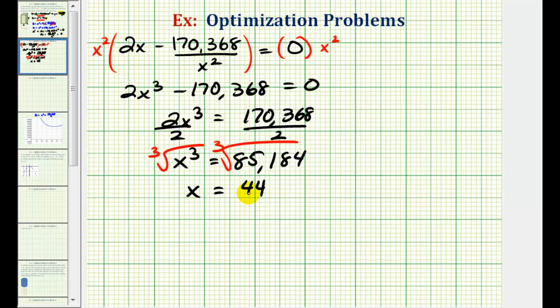So we probably would be correct to assume this x value will minimize the surface area formula. To be completely sure, let's go ahead and use the second derivative test. Remember the first derivative was equal to two x minus 170,368 x to the power of negative one.